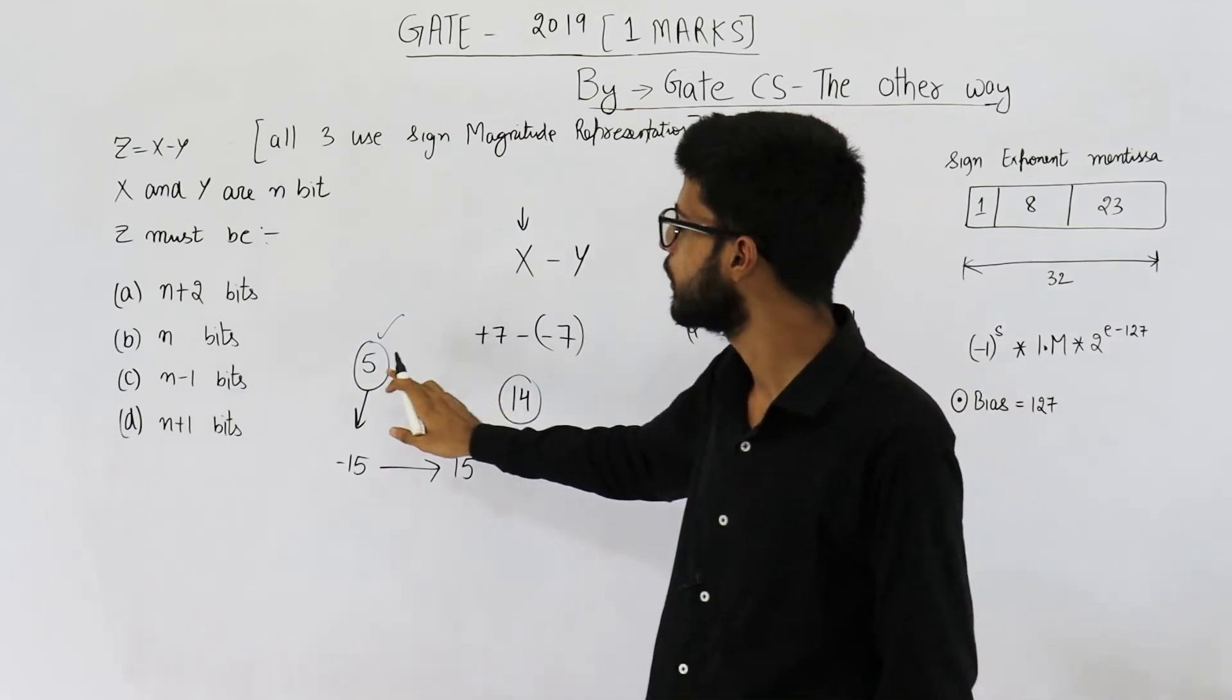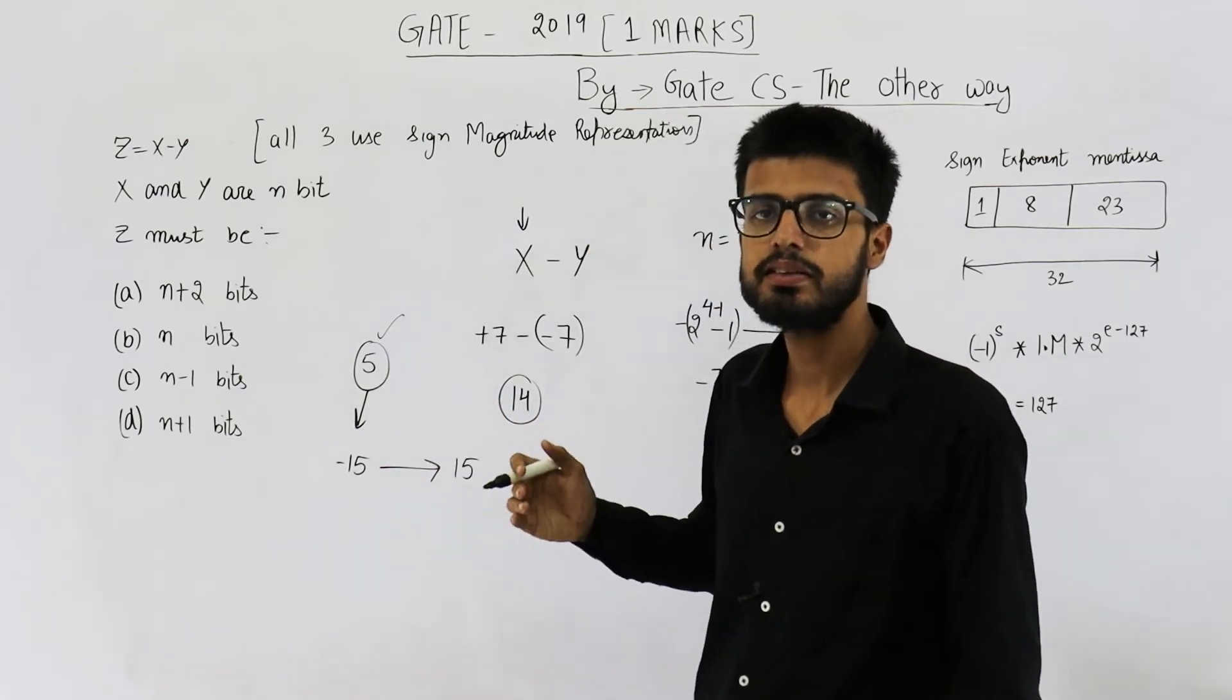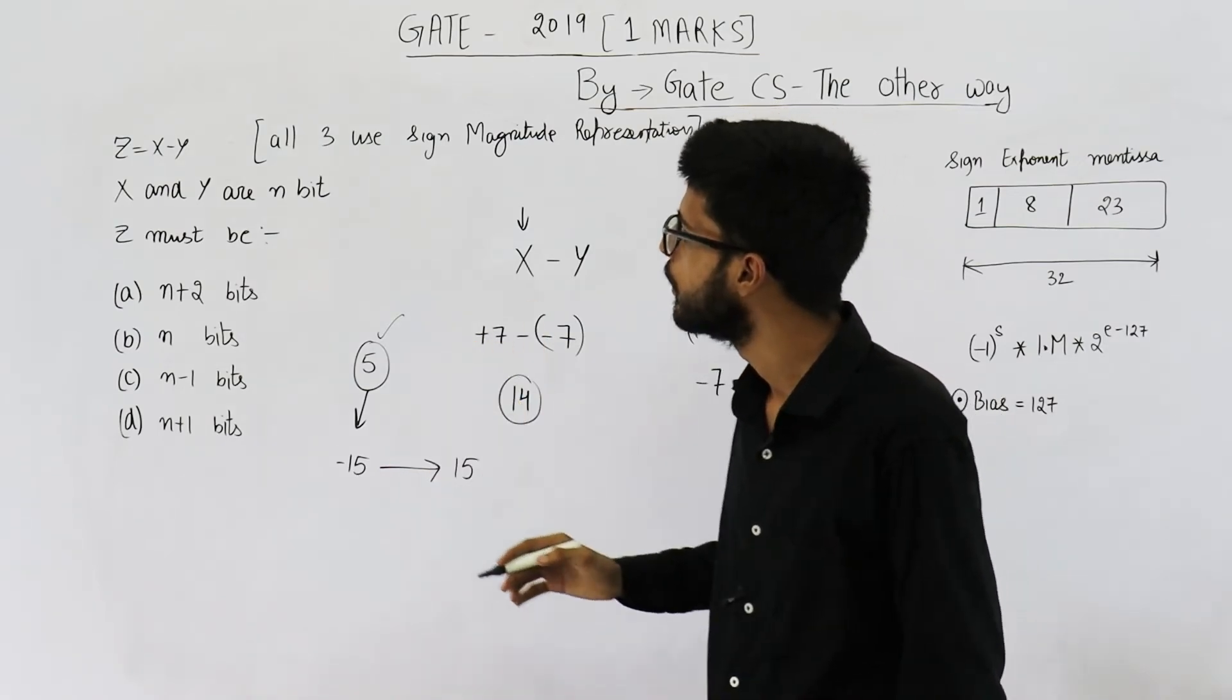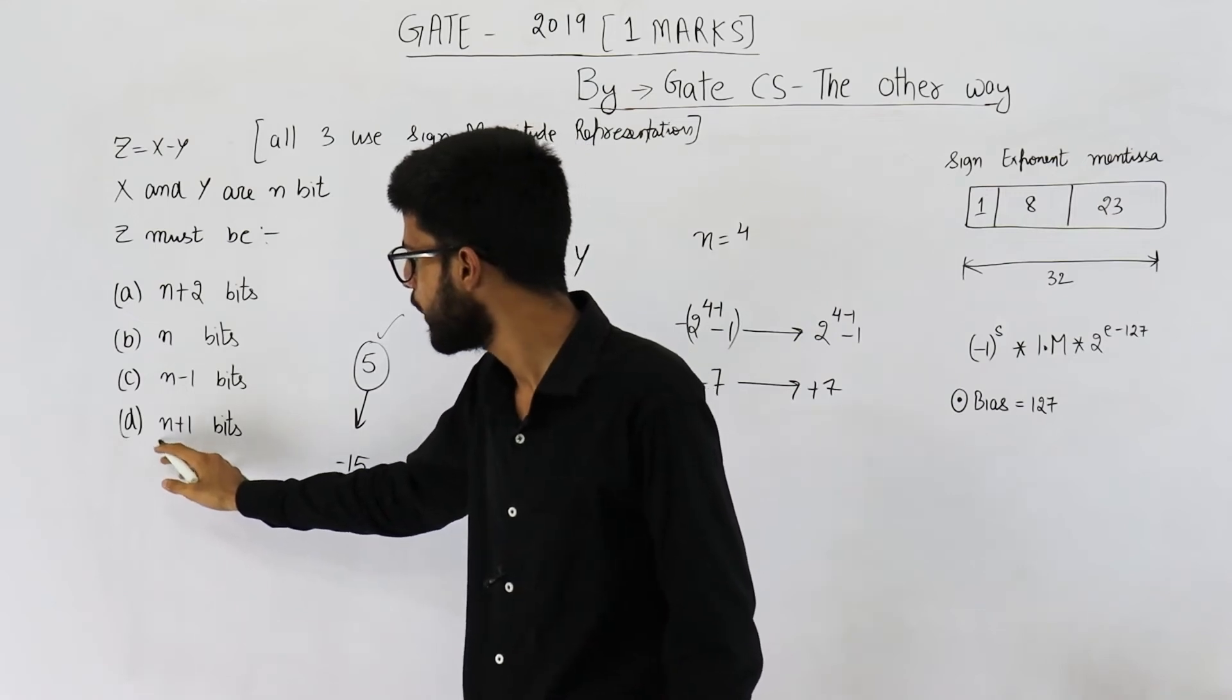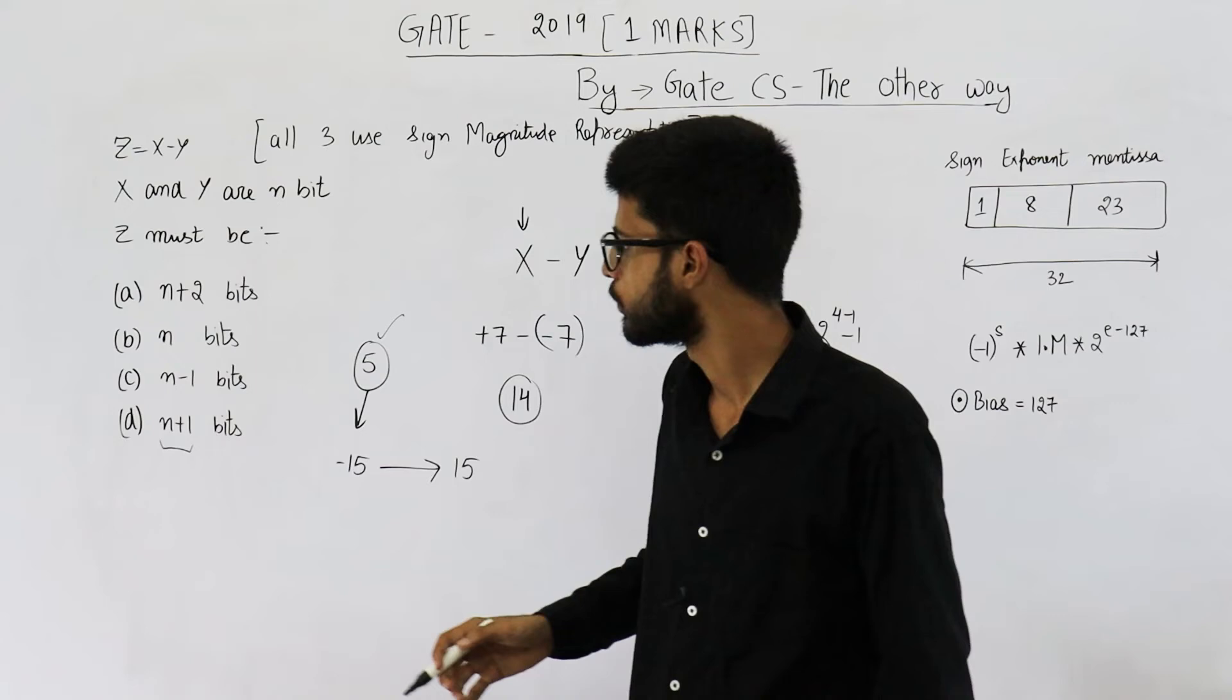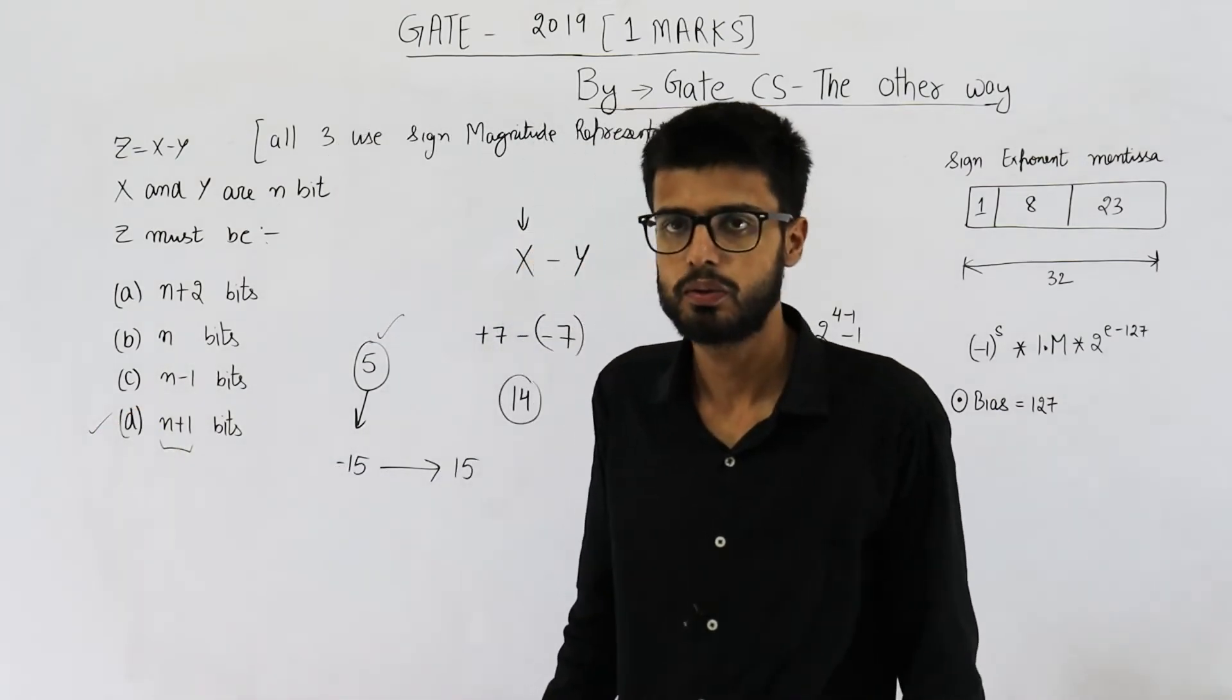Now, if the result is of 5 bits, that means you are causing the overflow of 1 bit in worst case. So you should have n plus 1 bits if you want to prevent overflow. Answer is option D, n plus 1.